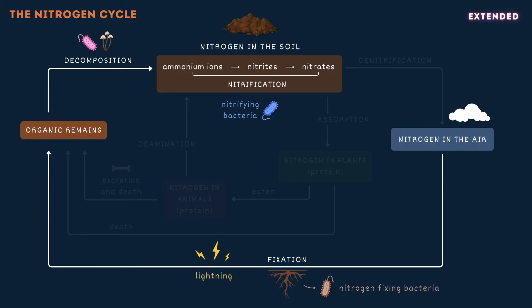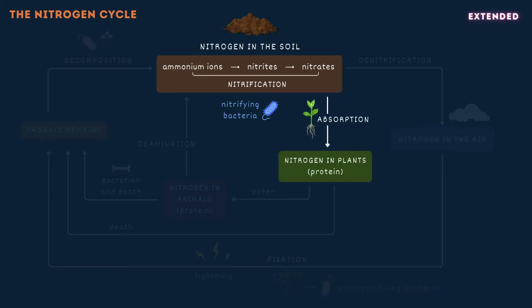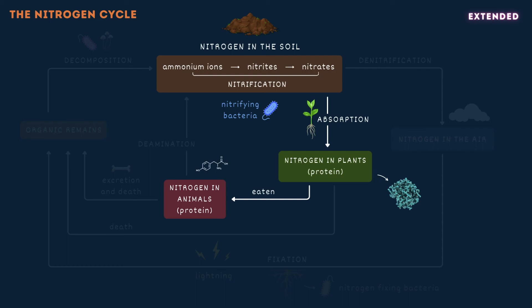The nitrates produced by these bacteria are absorbed by plants through the roots and used to synthesize amino acids, which are then assembled into proteins essential for the growth and development of the plant. Some of these plants will die and decompose, but others will be eaten by animals. During digestion, plant proteins are broken down by enzymes into amino acids which can be absorbed and incorporated into the animal's body. Excess amino acids cannot be stored, so are instead broken down by the liver to form ammonia through a process called deamination. The ammonia is then converted into ammonium ions and excreted by the kidneys.